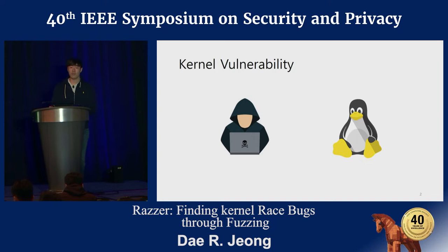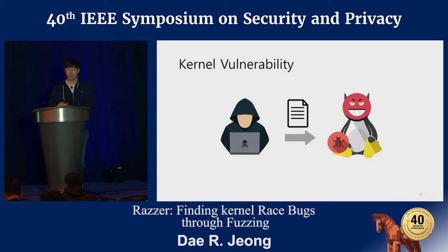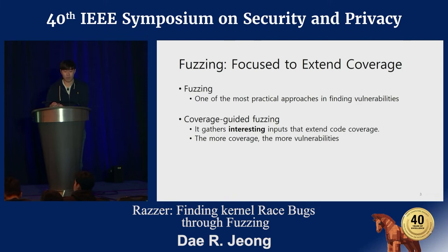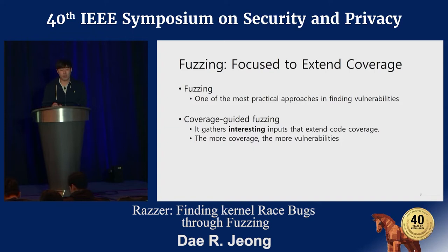Kernel vulnerabilities have a very important meaning in system security. Because a kernel has the highest privilege, if the kernel vulnerability is compromised by the attacker, then the attacker may control the entire system. So, fuzzing would be one of the most practical approaches in finding such vulnerabilities. Most approaches are coverage-guided fuzzing, which gathers interesting inputs that extend code coverage, and since more code coverage typically translates to more vulnerabilities, it appears to be very effective.